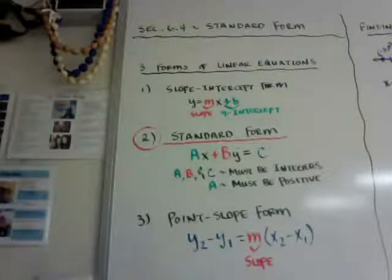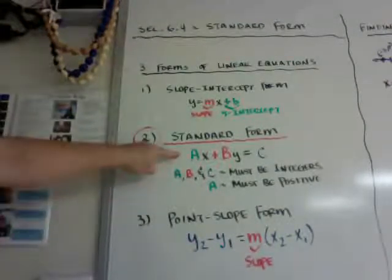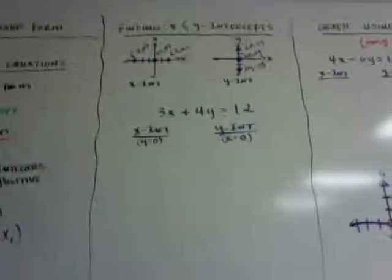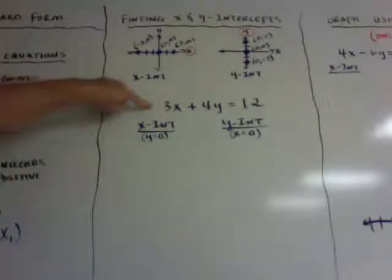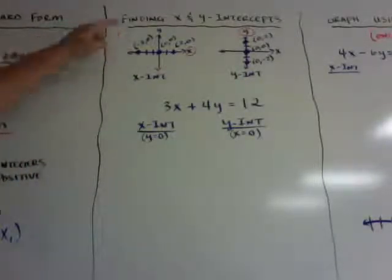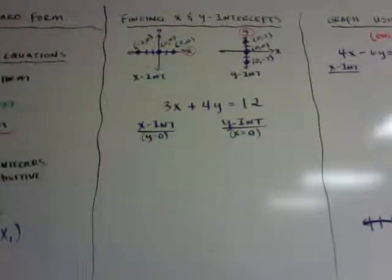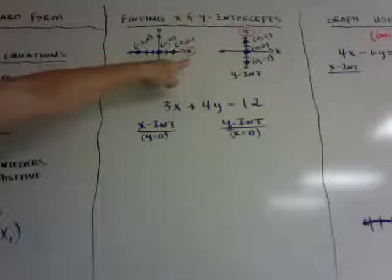If you make it positive, whether they want it positive or not, at least you'll be correct. So again, ax plus by equals c is your standard form. Here's an equation in standard form: 3x plus 4y equals 12, and it will tell you to find the x and y intercepts. Before I do that, let me explain the x and y intercepts real quick.